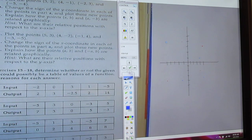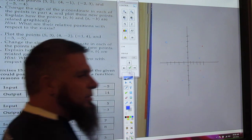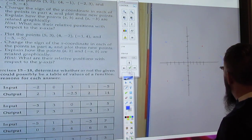And so then it wants to explain how the points A and B and A, negative B, are graphically related. Well, they're graphically related because they reflect across the x-axis.